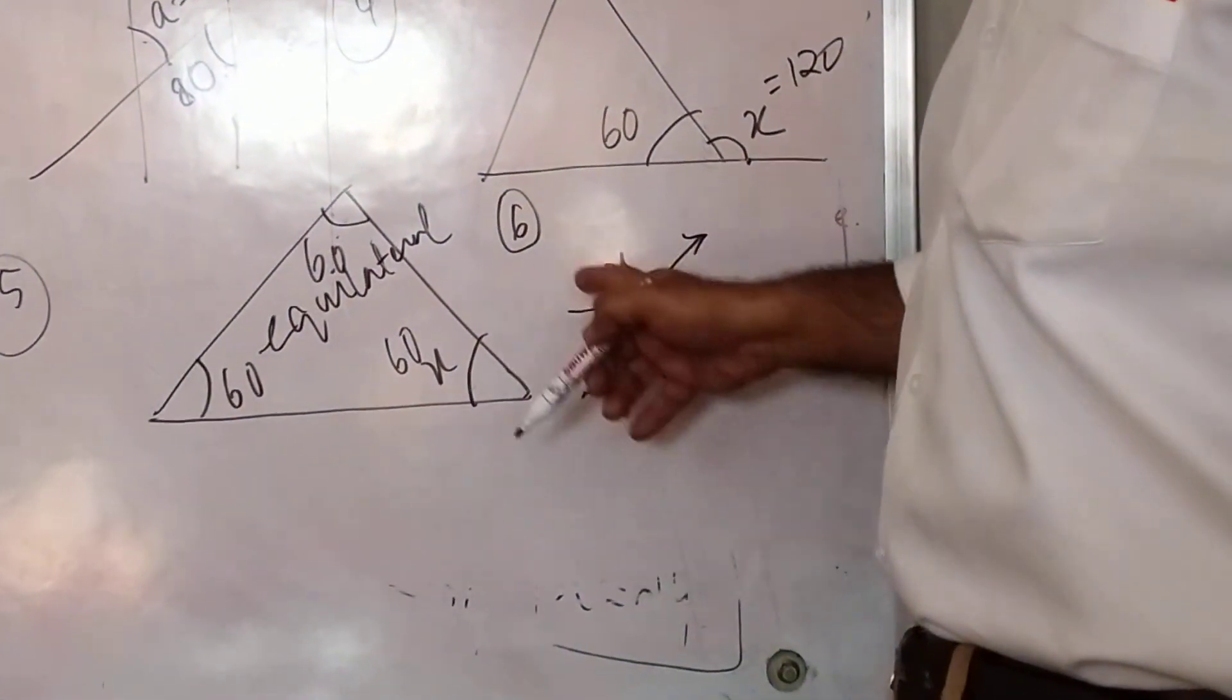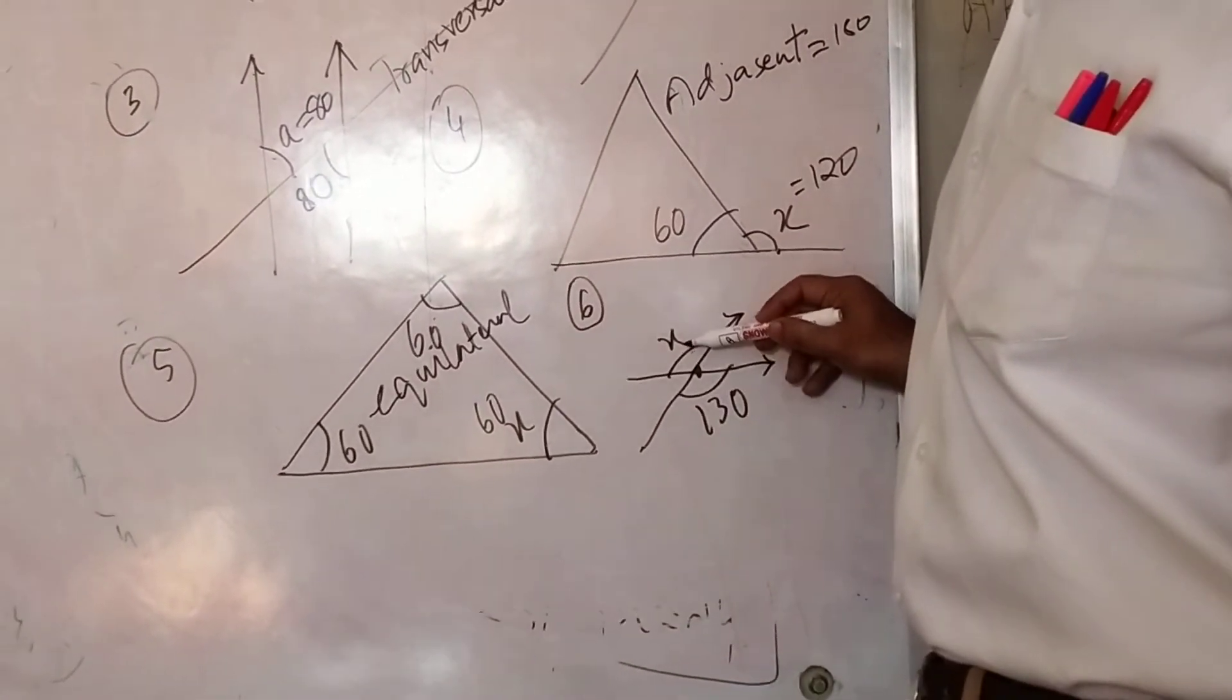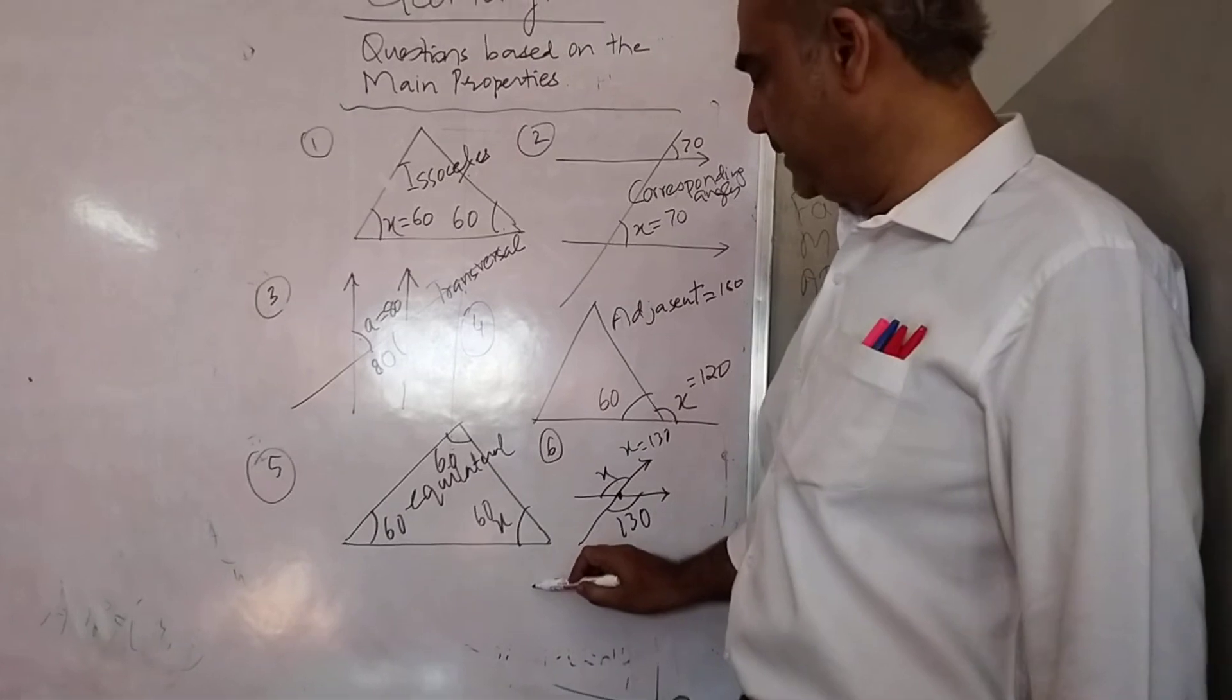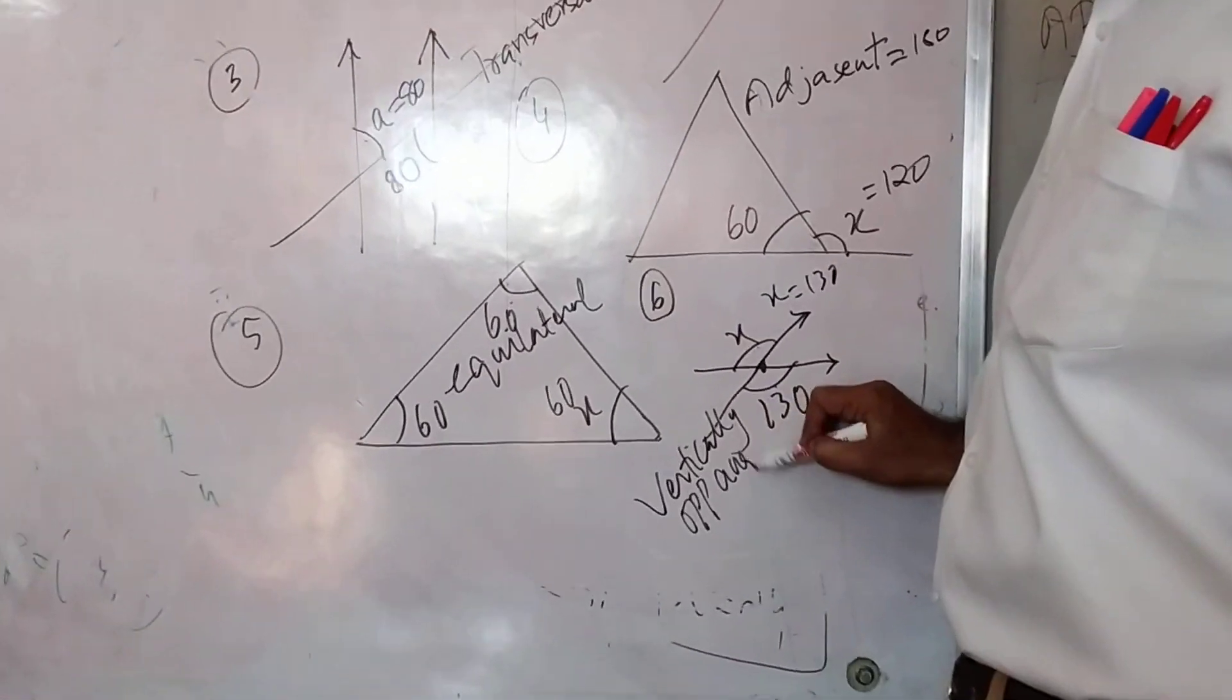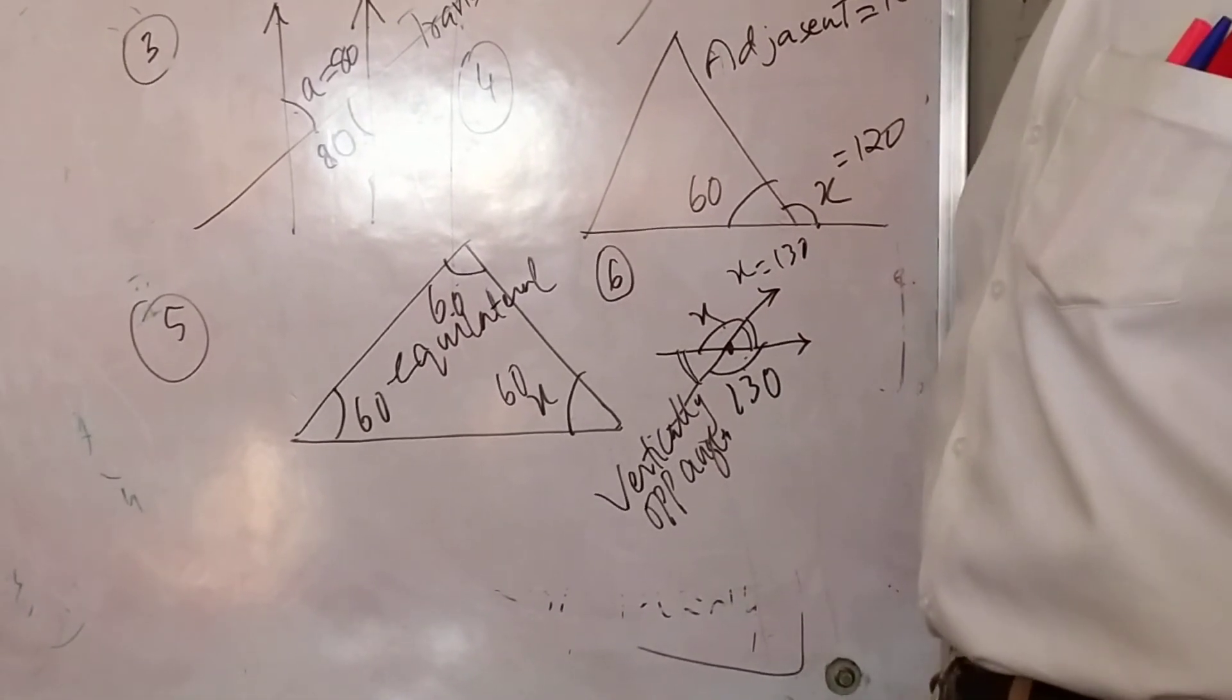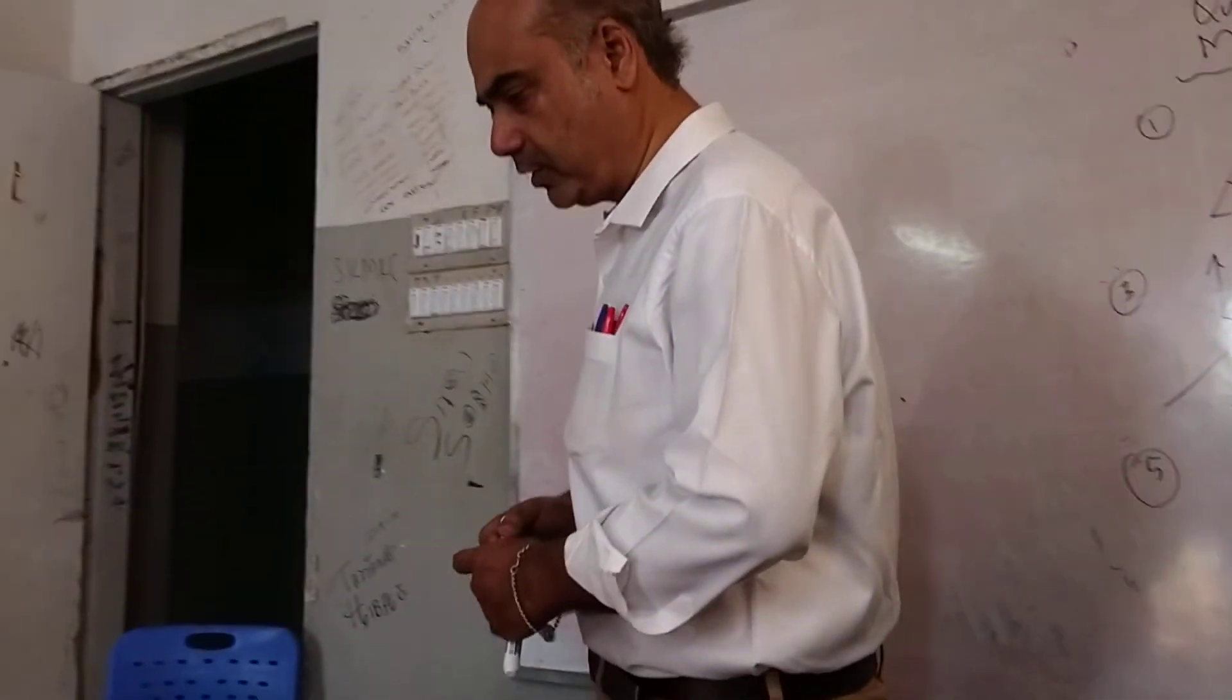What do we call this property? Number 6. Two transversals cutting each other. They are vertically opposite angles. Intersecting vertically opposite angles. So X will be equal to 130, and this is known as the vertically opposite angles. If these two angles are equal, then the angles which are made on this side as well, they will also be equal. X equals to 130. This is the property related to your angles.